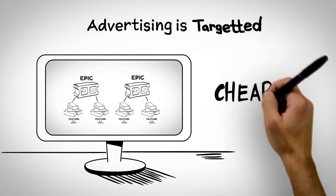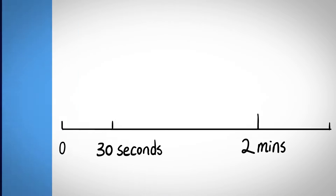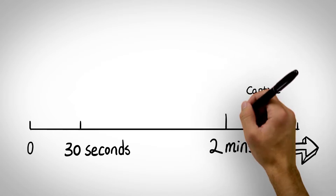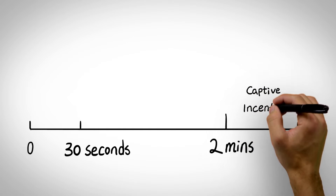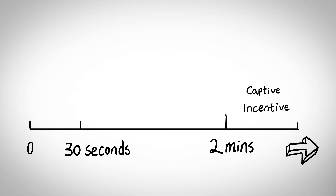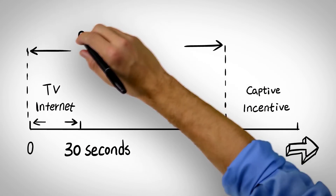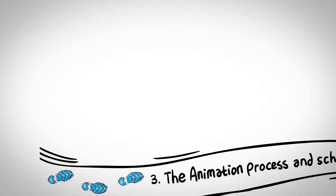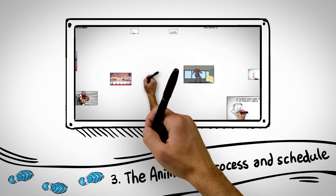Two minutes also applies because video advertising is far more targeted today and ad space is far cheaper than it was 10 years ago. Going longer than two minutes is fine if your audience is captive or if they have incentive to watch. Going for 30 seconds is good if your video has a sizable ad spend on television or the internet. The majority of us don't fall into that category, and that leads us to Step 3.